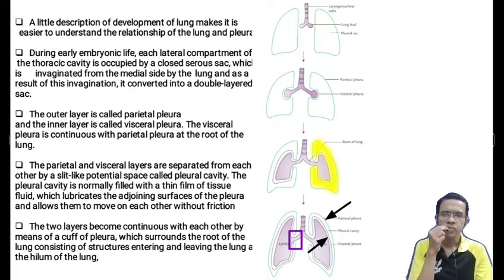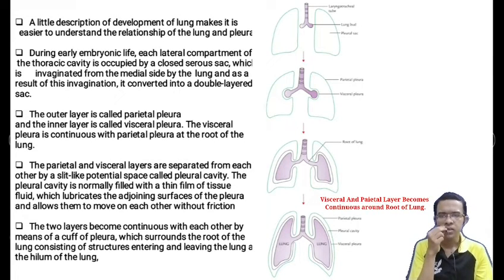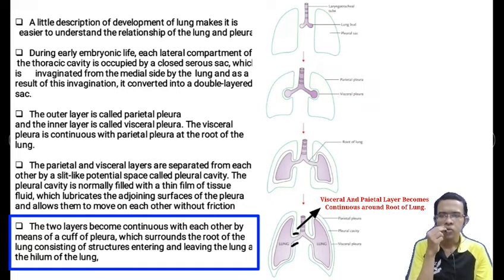The parietal and visceral pleura are separated from each other by a slit-like potential space which is called the pleural cavity. The pleural cavity is normally filled with a thin film of tissue fluid which lubricates the adjoining surface of the pleura and allows them to move on each other without any friction. These two layers become continuous with each other by means of a cuff of pleura which surrounds the root of the lung, consisting of the structures entering and leaving the lung through the hilum of the lung.